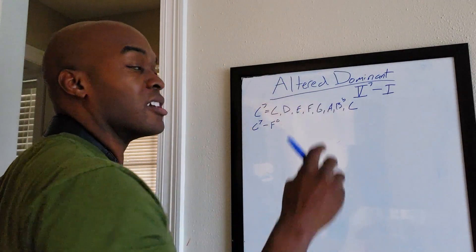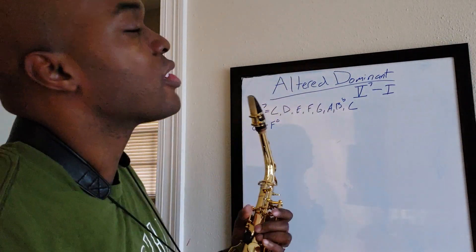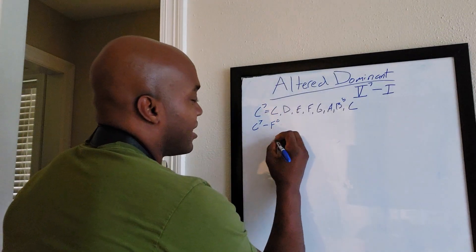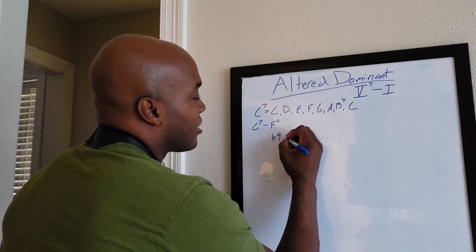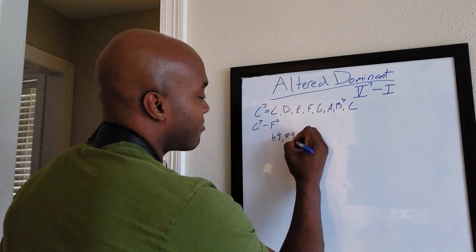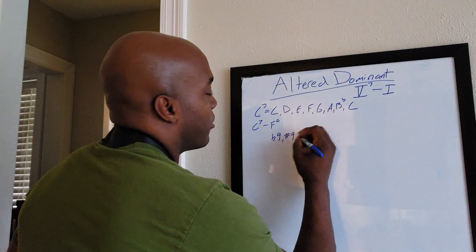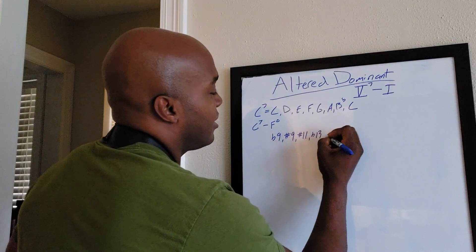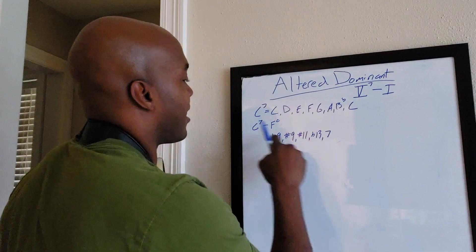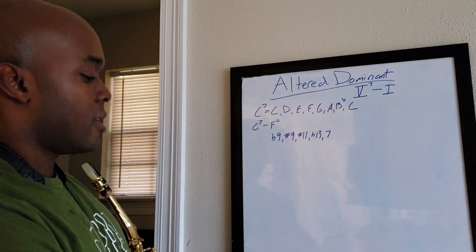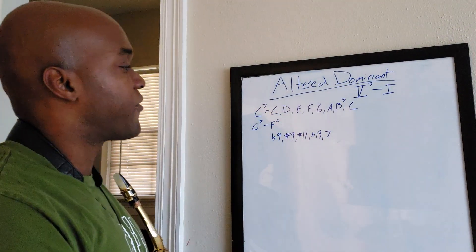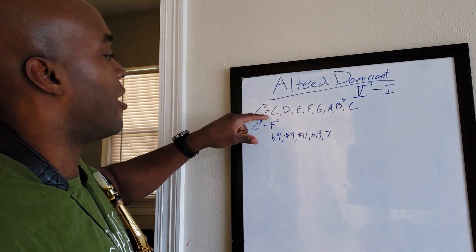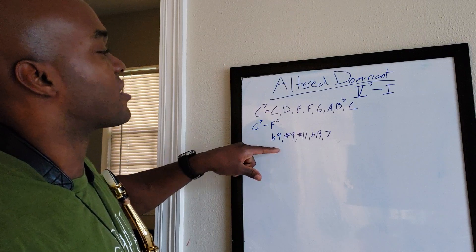Basically, I can alter any note in this dominant scale, and the alterations would be the altered dominant. An altered dominant basically gives you the flat 9, the sharp 9, the sharp 11, the flat 13, and of course it gives you the 7th which is written in the scale. So the question is, how do we get from playing a normal C mixolydian scale to playing all these alterations?